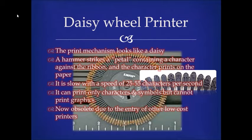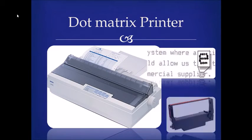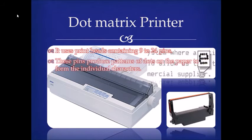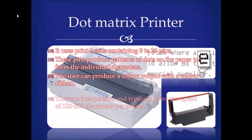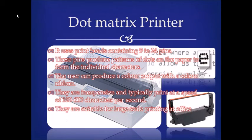Now it is obsolete due to the entry of other low-cost printers. Dot matrix printer. It uses print heads containing 9–24 pins. These pins produce patterns of dots on the paper to form the individual characters. The user can produce color output with a color ribbon. They are inexpensive and typically print at a speed of 100–600 characters per second. They are suitable for large-scale printing at office.